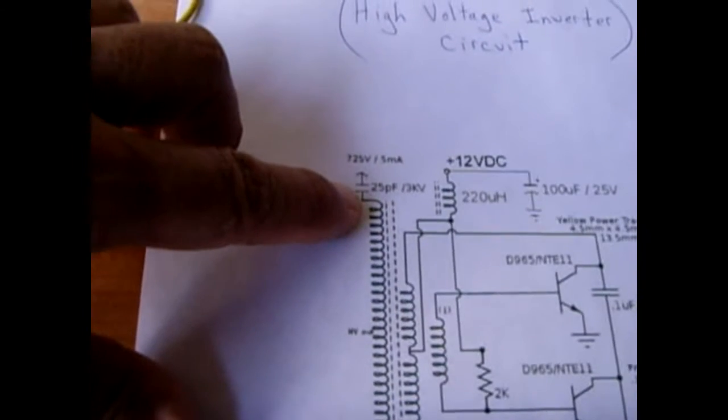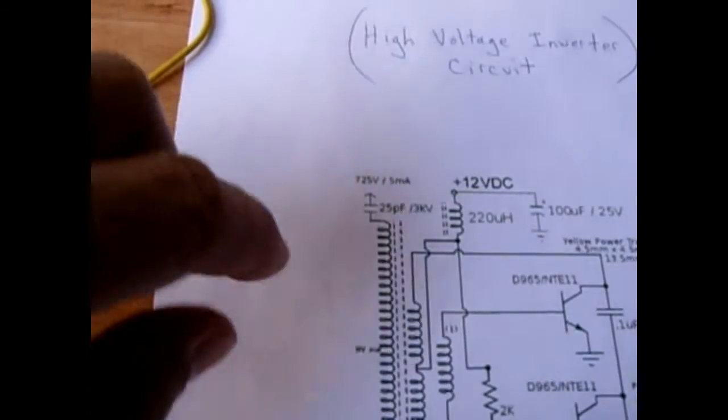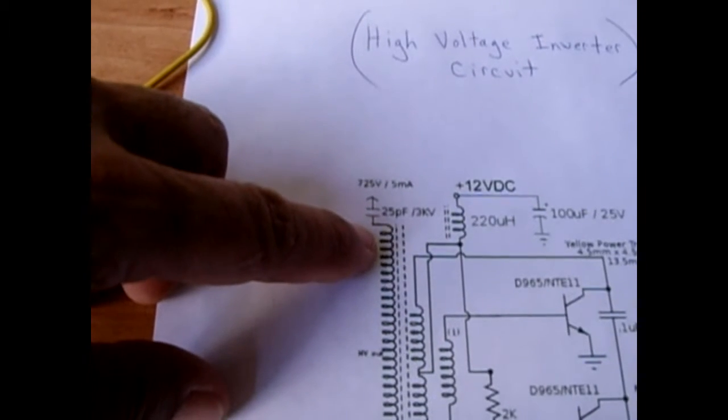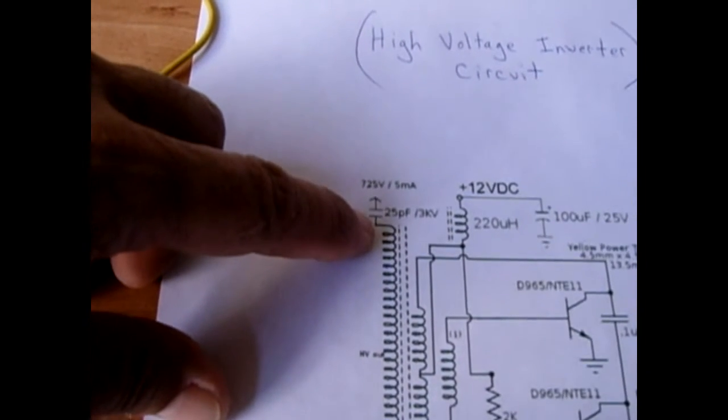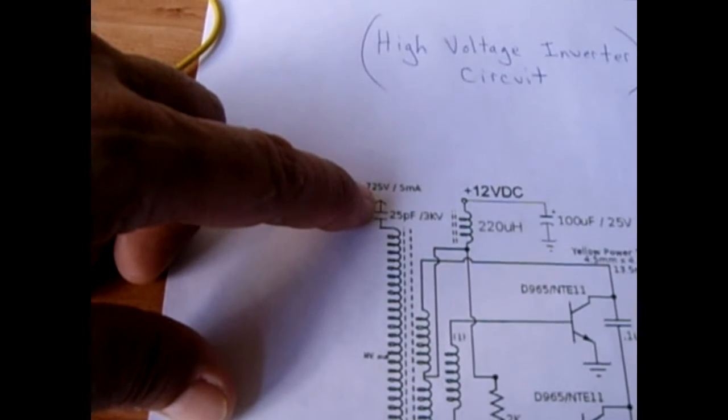This capacitor here is a 25 picofarad 3000 volt rated capacitor and the reason for that capacitor is to act like a resistor and limit the current that's feeding into your high voltage lamp or whatever else you want to power.